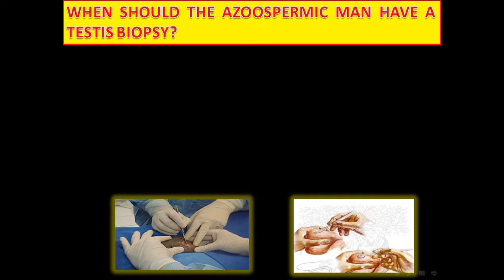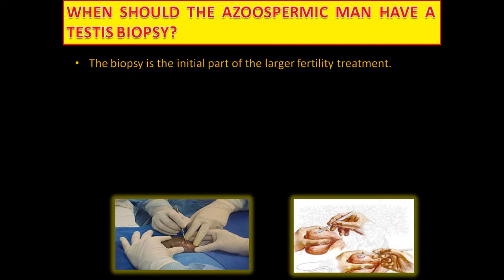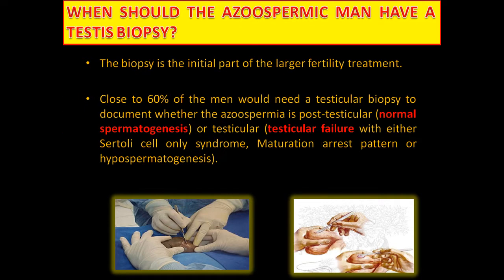When should the azoospermic man have a testicular biopsy? The biopsy is the initial part of a larger fertility treatment. Close to 60% of men would need a testicular biopsy to document whether the azoospermia is post-testicular with normal spermatogenesis, or testicular failure with Sertoli cell-only syndrome, maturation arrest, or hypospermatogenesis.